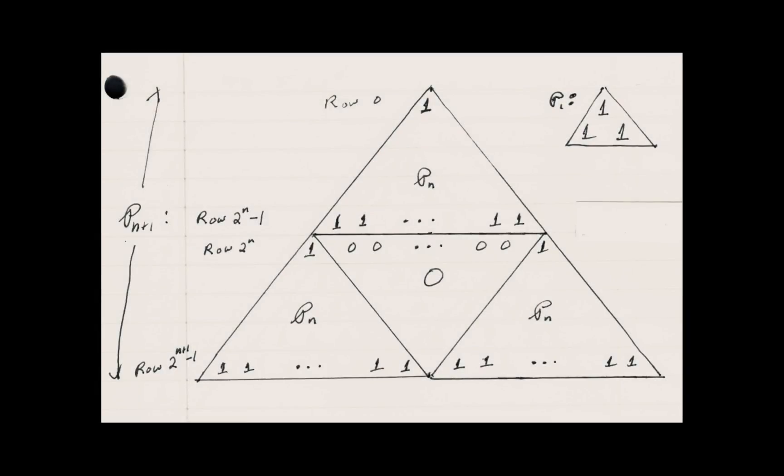By definition, p_n is rows 0 through 2^n of Pascal's triangle. p_1, notice on the top right, is very simple. And the ones, which are the odd numbers, appear once and twice in the two rows. Both 1 and 2 are powers of 2.